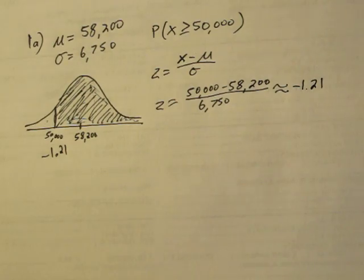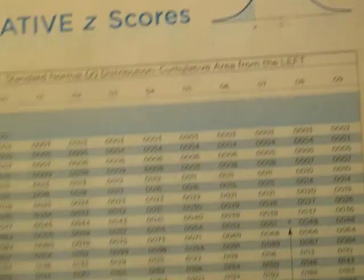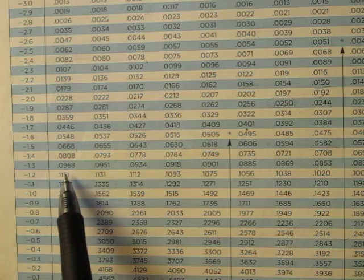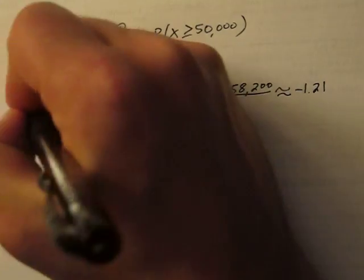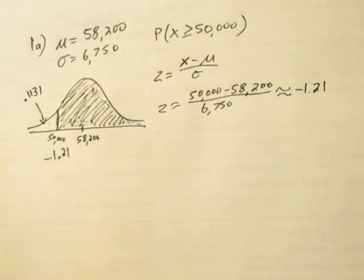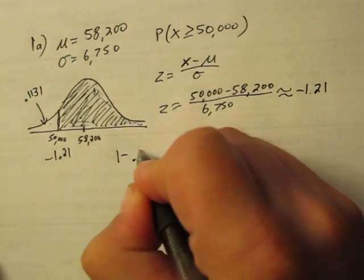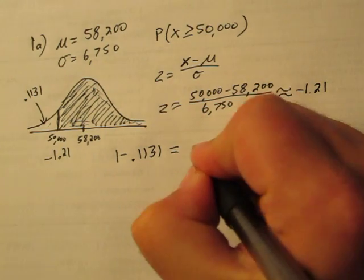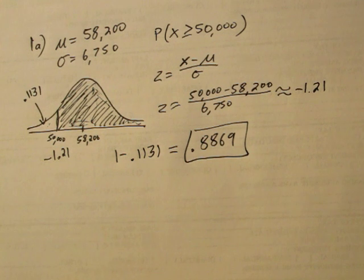Our negative Z chart is here. Negative 1.21, so here's negative 1.2. Negative 1.21 is 0.1131, so this area here is 0.1131. All we do is take 1 and subtract that area we found from it, and that will give us the probability that we're looking for. Turns out 0.8869.